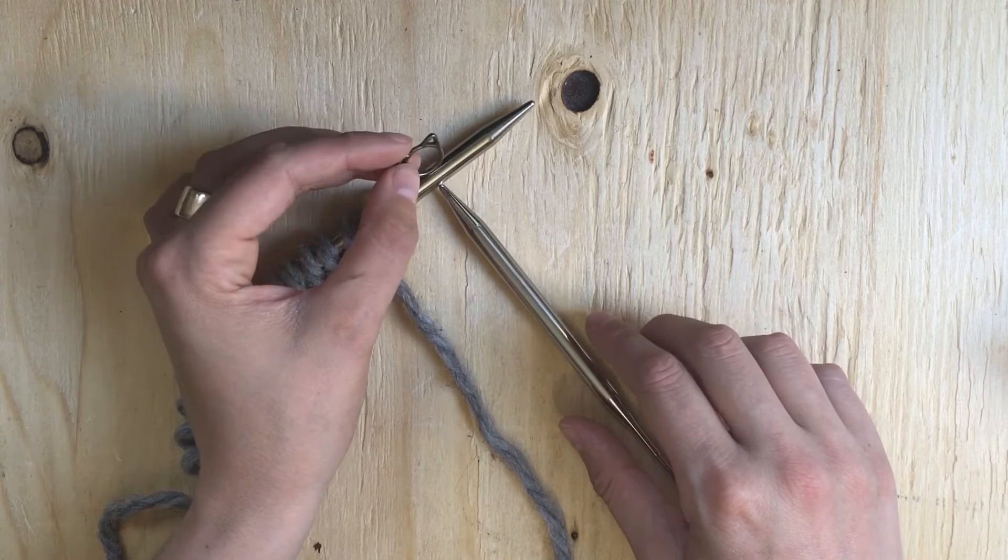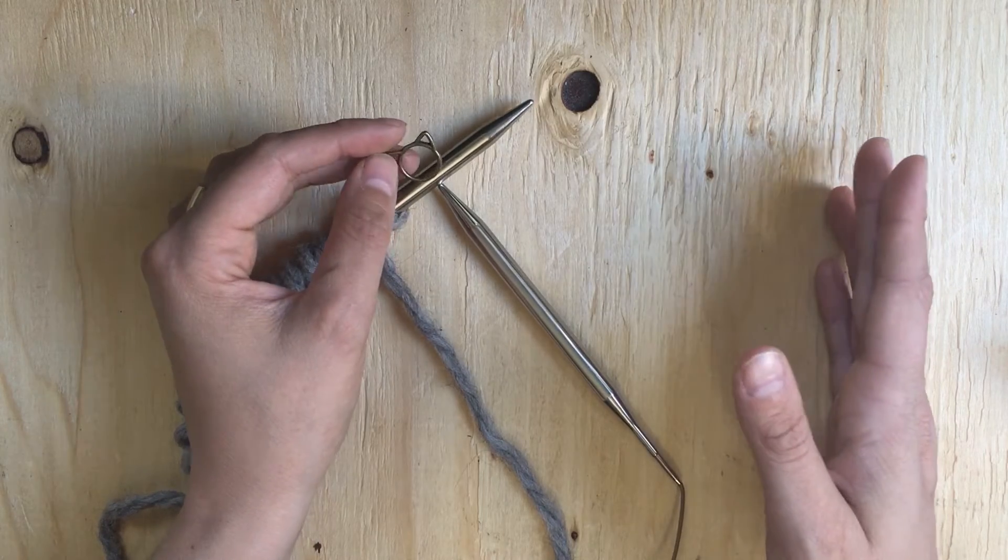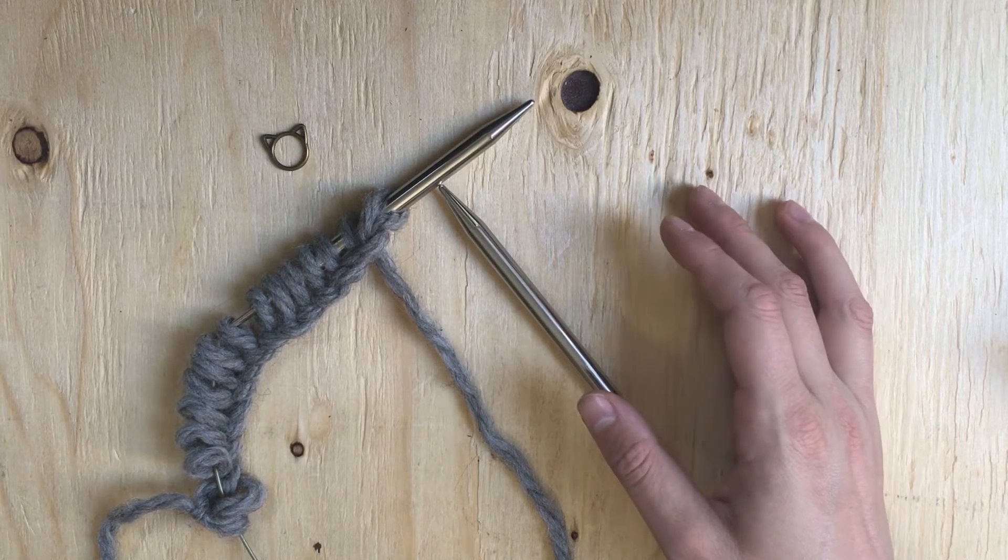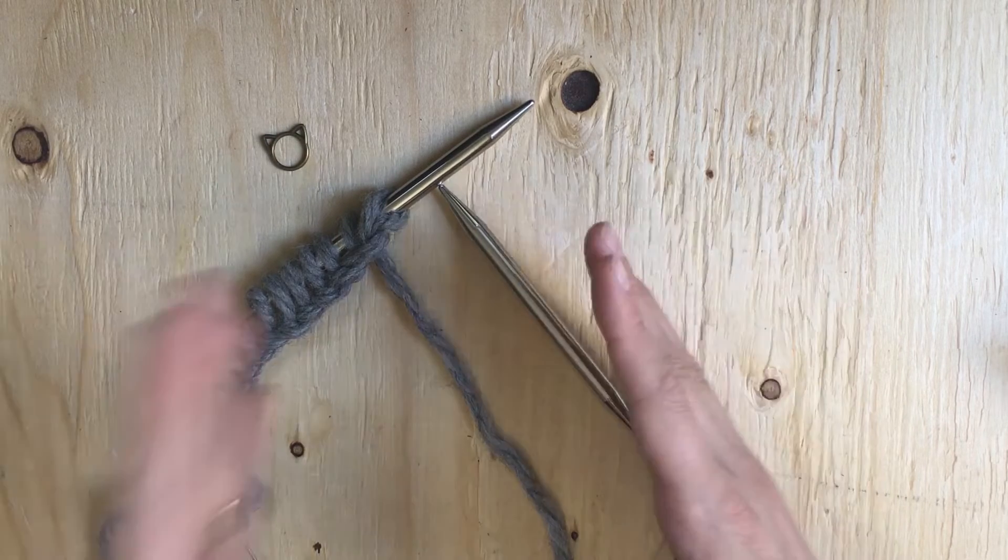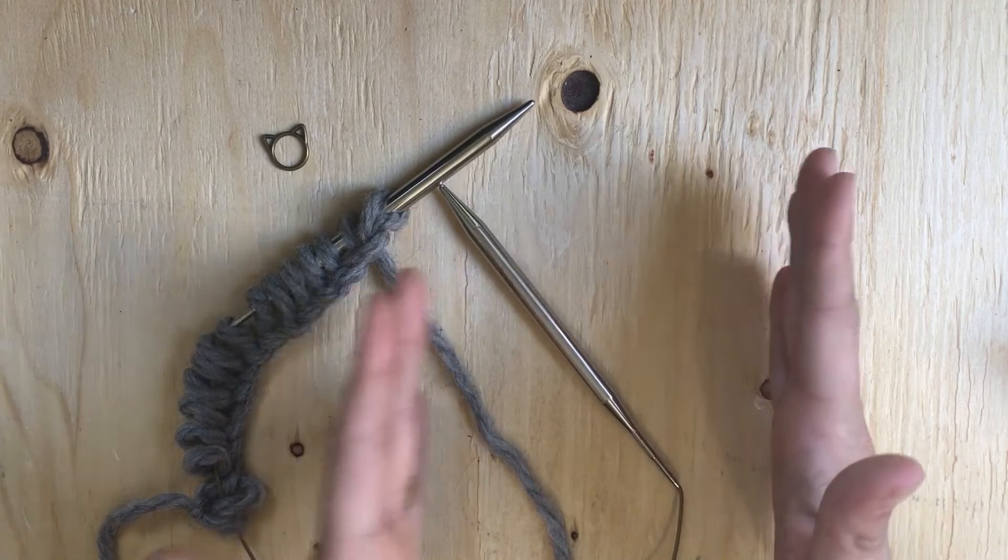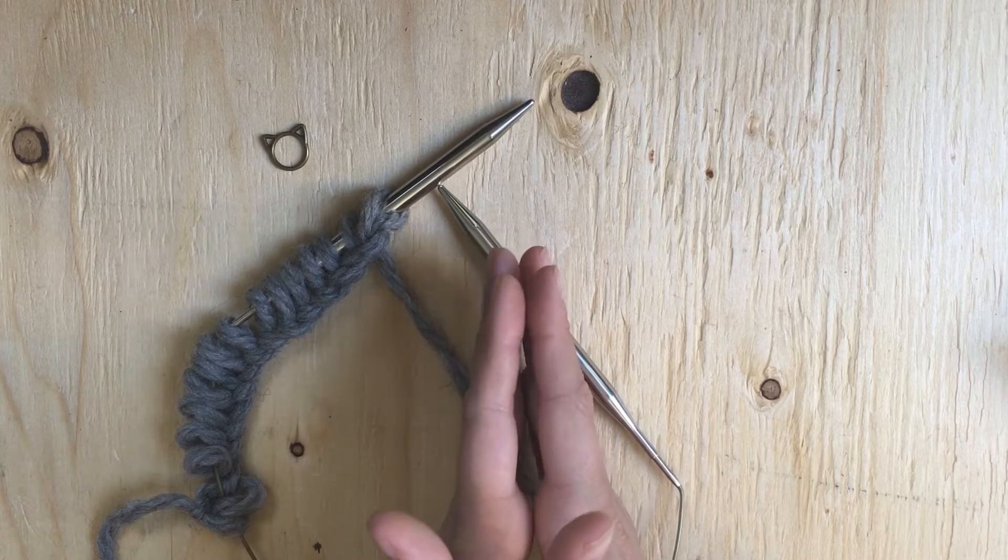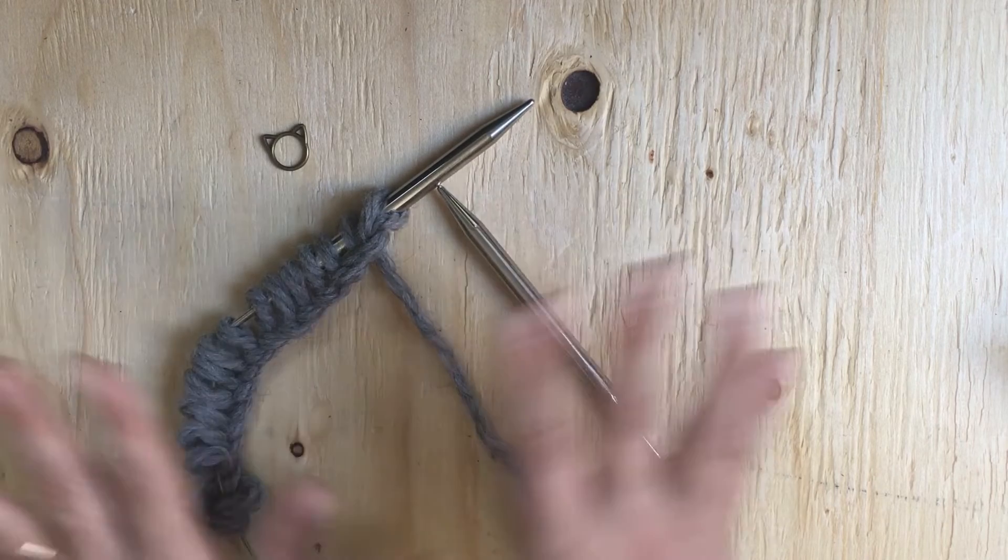This is just going to be a marker. It can be used for lots of things. It can be used at the beginning of a round if you're working in the round. It can be used to section off parts of your knitting. So say you're doing one pattern over here, well then you can place your marker and then you know to switch to this pattern or lots of different things.